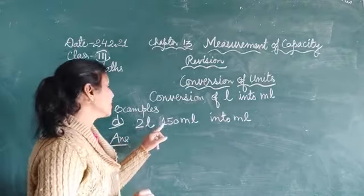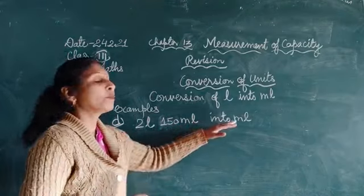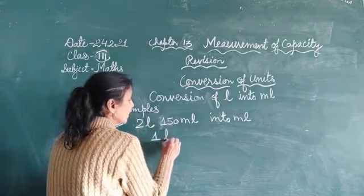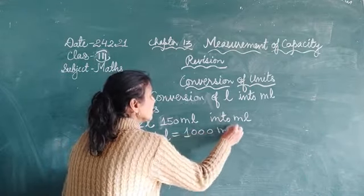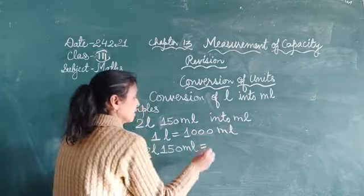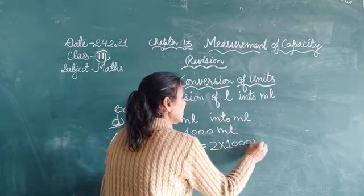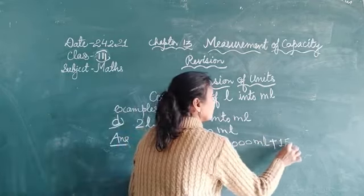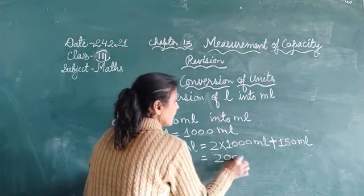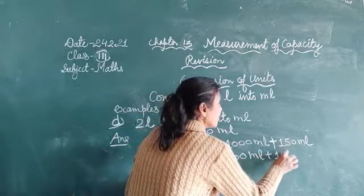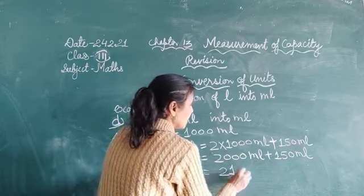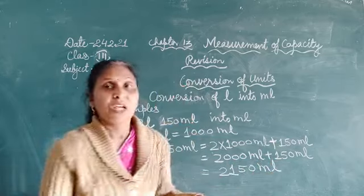Next, part D: 2 litres 150 millilitres converted into millilitres. First step — we know that one litre equals one thousand millilitres. In the second step, 2 litres 150 millilitres equals 2 multiplied by one thousand millilitres plus 150 millilitres, which gives us 2,000 millilitres plus 150 millilitres, equaling 2,150 millilitres. This is the answer.